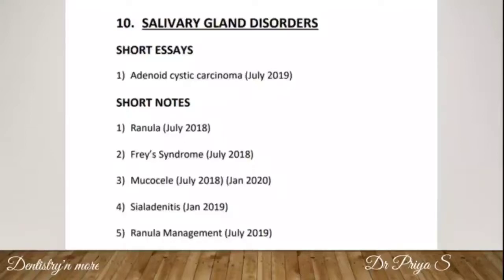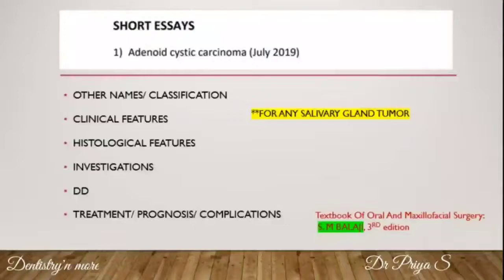Apart from these, other questions like pleomorphic adenoma and tumor sialography are also important. The first question is adenoid cystic carcinoma. For any salivary gland tumor question, you need to include all these headings in your answer. First, mention all the synonyms of the given condition and the classification — whether that particular tumor is benign or malignant, whether it is epithelial in origin or not.